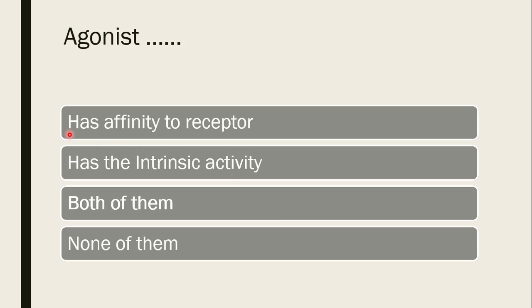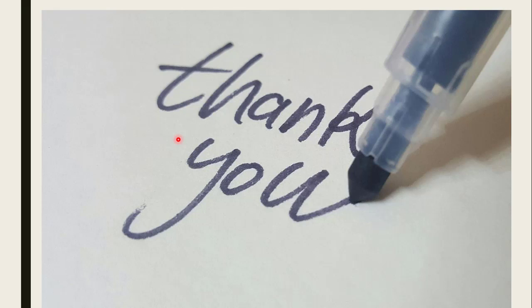Next question: an agonist — does it have affinity to receptor, intrinsic activity, both, or none? The correct answer is both of them. An agonist has affinity to bind the receptor as well as intrinsic activity. With this, we finish a few of the MCQs from the pharmacology introduction part. Thank you.